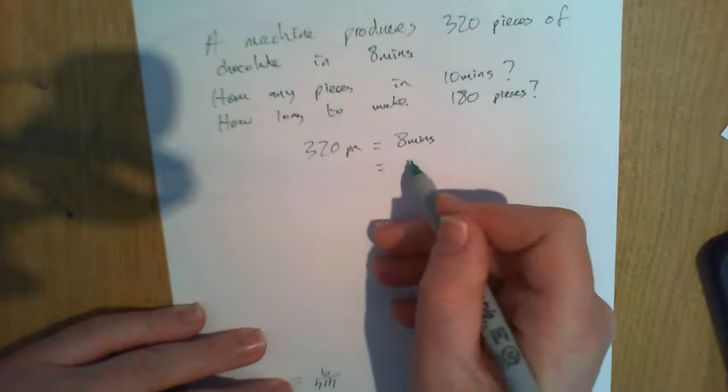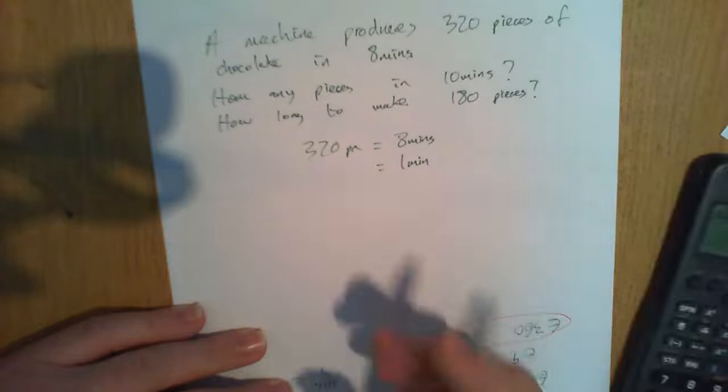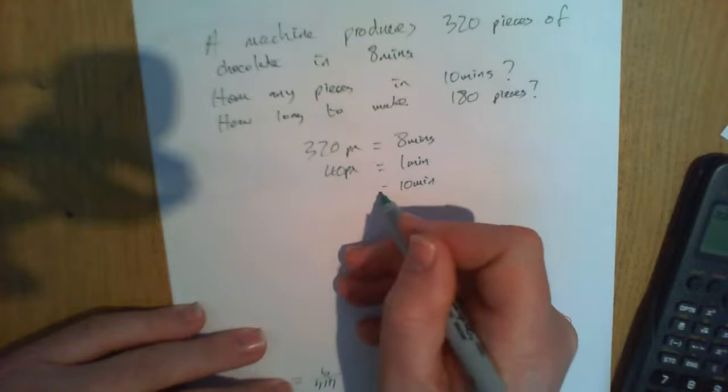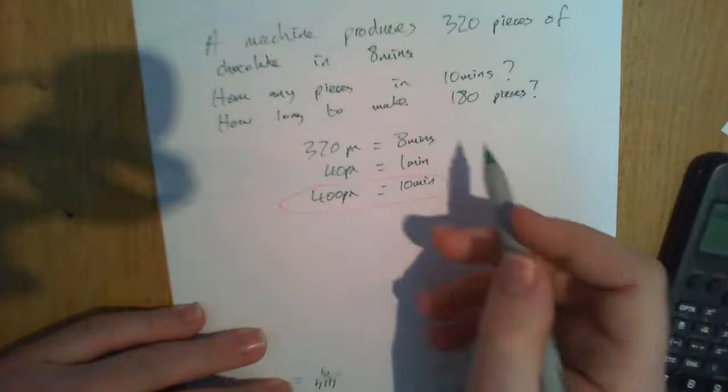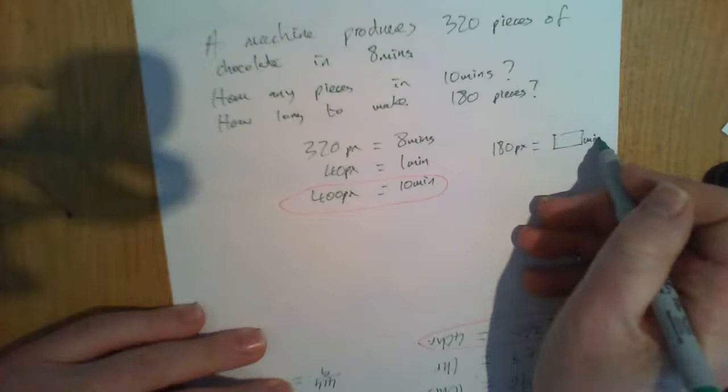That means in 10 minutes we'll get 400 pieces. So there's one of my answers. And now I have 180 pieces, that's equal to how many minutes? Well, 1 minute gives me 40, so 180, 4 and a half minutes.